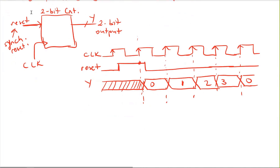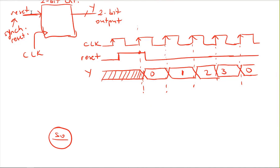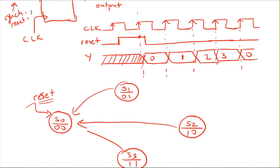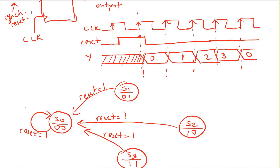Drawing the state diagram: S0 is output 00, S1 is 01, S2 is 10, and S3 is 11. The input is reset — if reset is one, we go to S0 from any state, with output Y equal to zero. For all other cases, S0 transitions to S1 and S1 transitions to S2 on the next clock cycle.